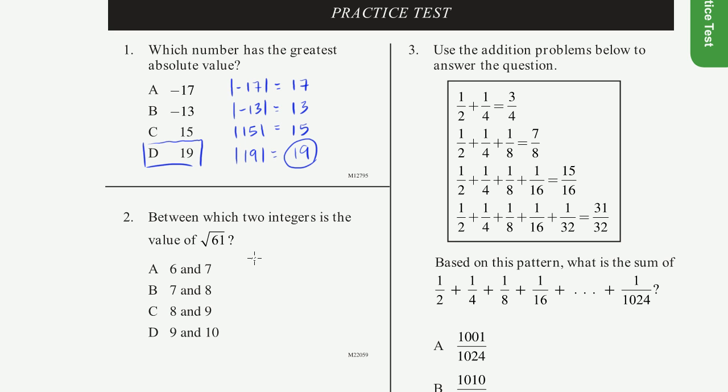So 6 squared is going to be 36. And then 7 squared is going to be 49. That number's not dark enough. Let me do a darker color. So this isn't going to be the case, right? Because the square root of 61, or 61, is greater than 49. So the square root of 61 is going to be greater than the square root of 49.